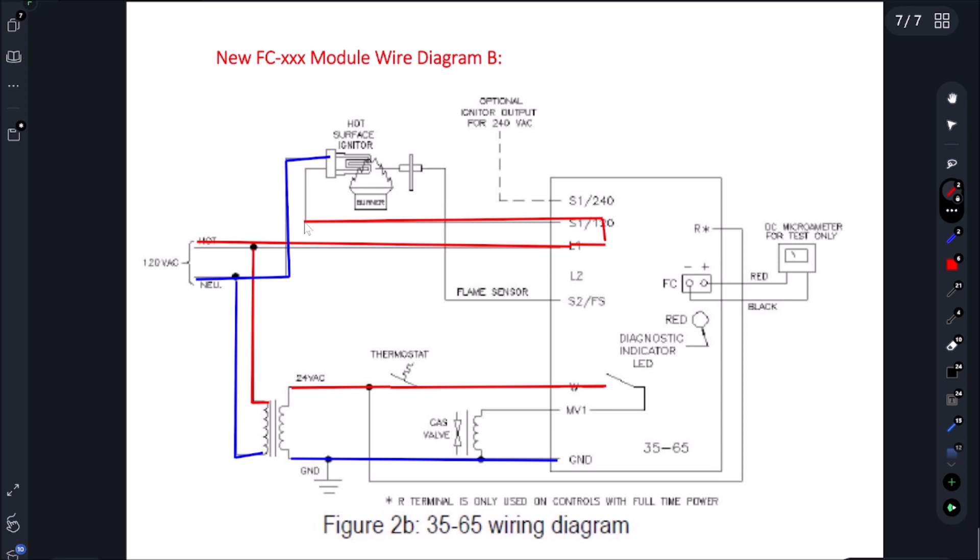We are getting power to our hot surface igniter because we could see it glowing orange. Once that happens and after a 10 second delay, this switch right here should be closing and we should be getting power to the gas valve. Let's go confirm whether or not we have 24 volts at this gas valve right here.